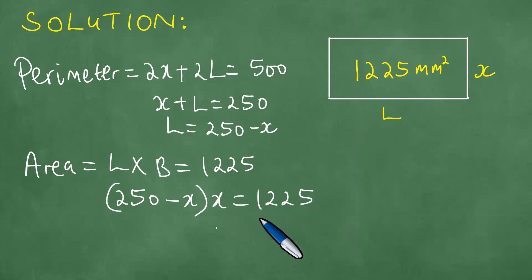1225, like so. And this is 250x minus x squared equals 1225. And this is what we get.